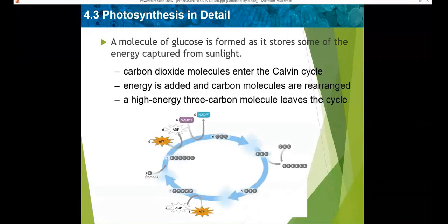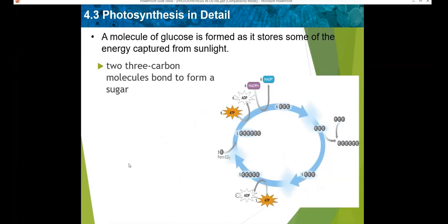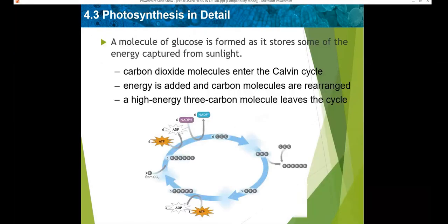You can follow along on page 105. Step one: carbon dioxide molecules are added to the five-carbon molecules already in the Calvin cycle. You can see the five-carbon molecules here. Six carbon molecules are formed — five were already present in the Calvin cycle and one carbon dioxide is added.